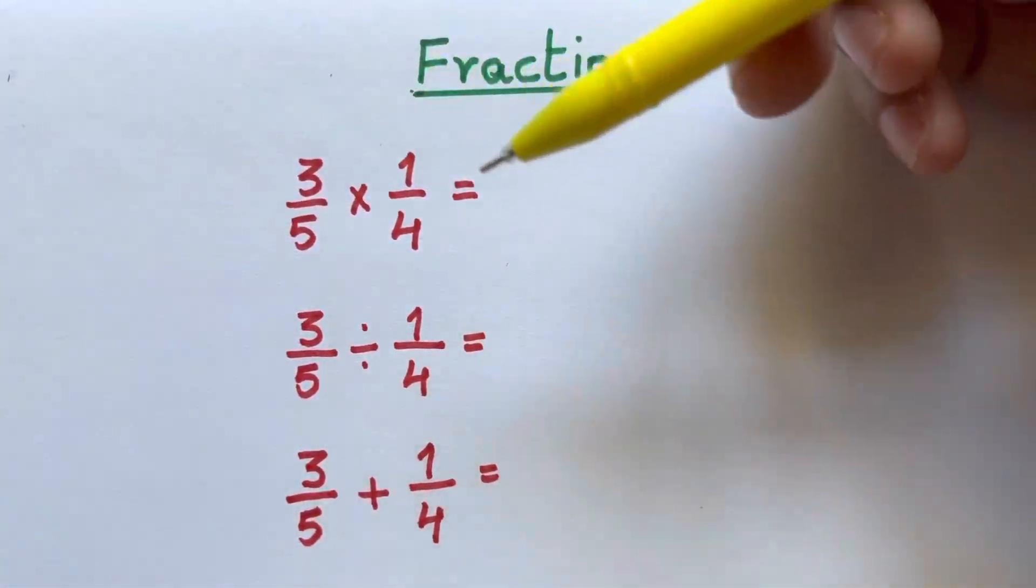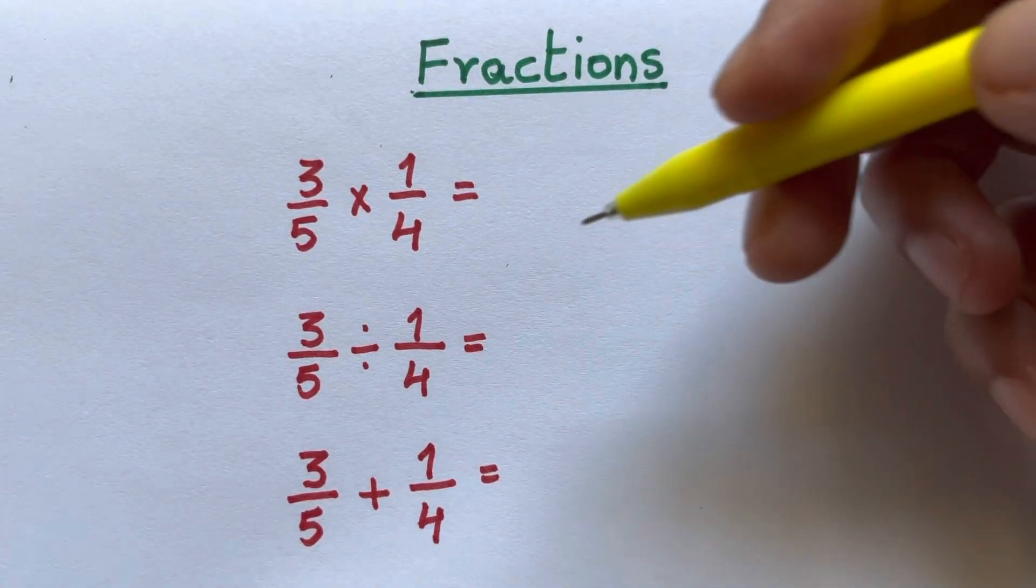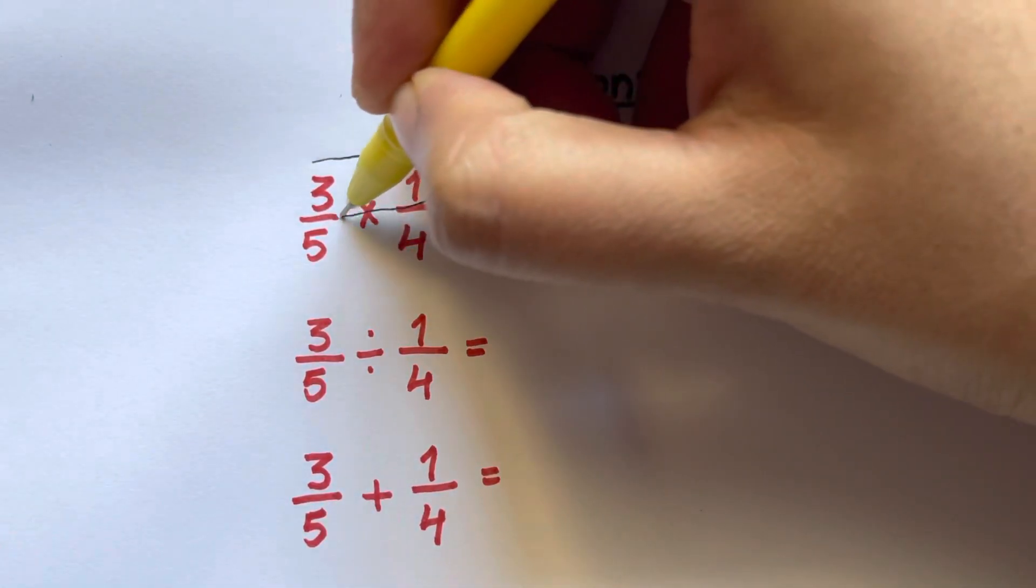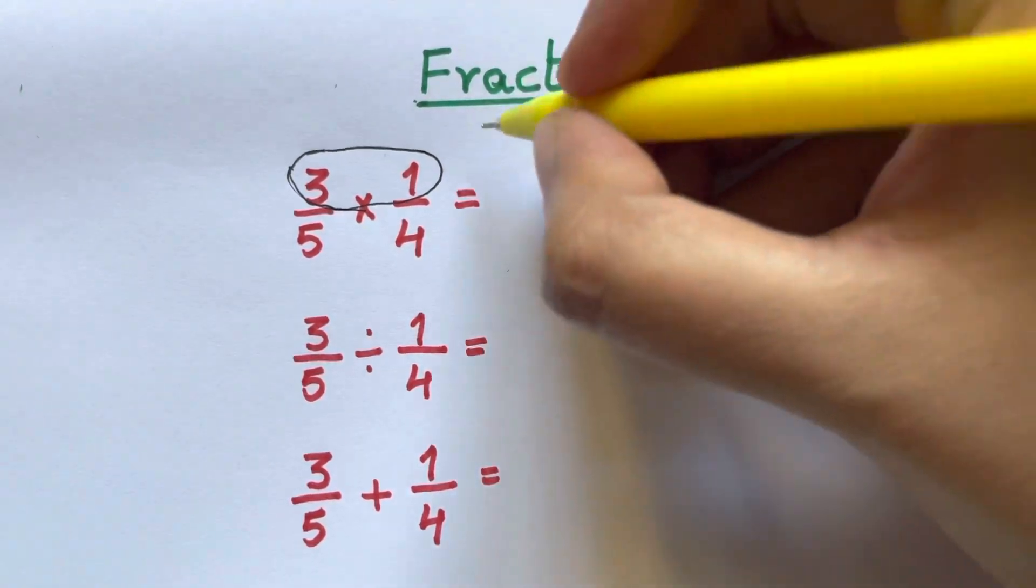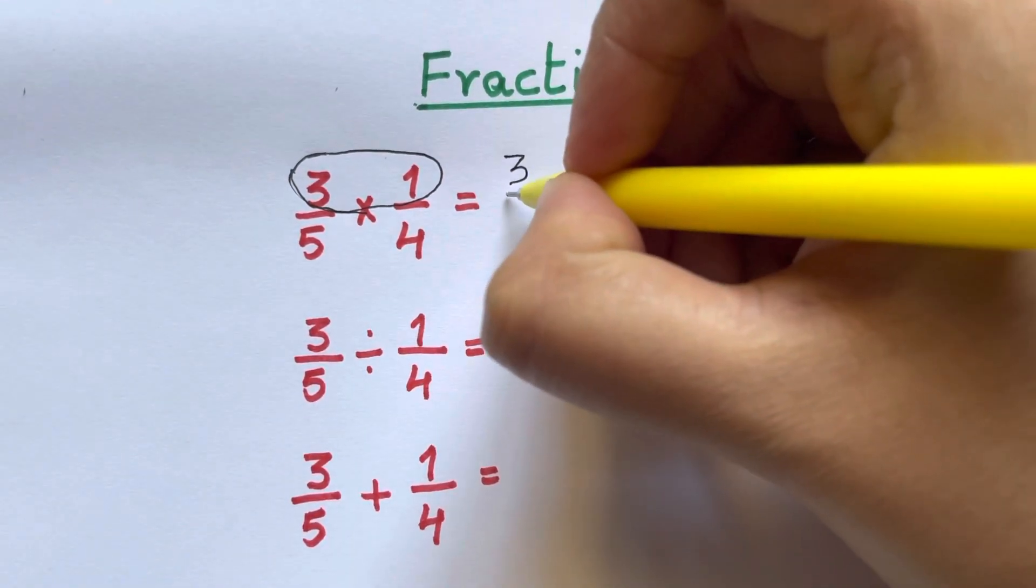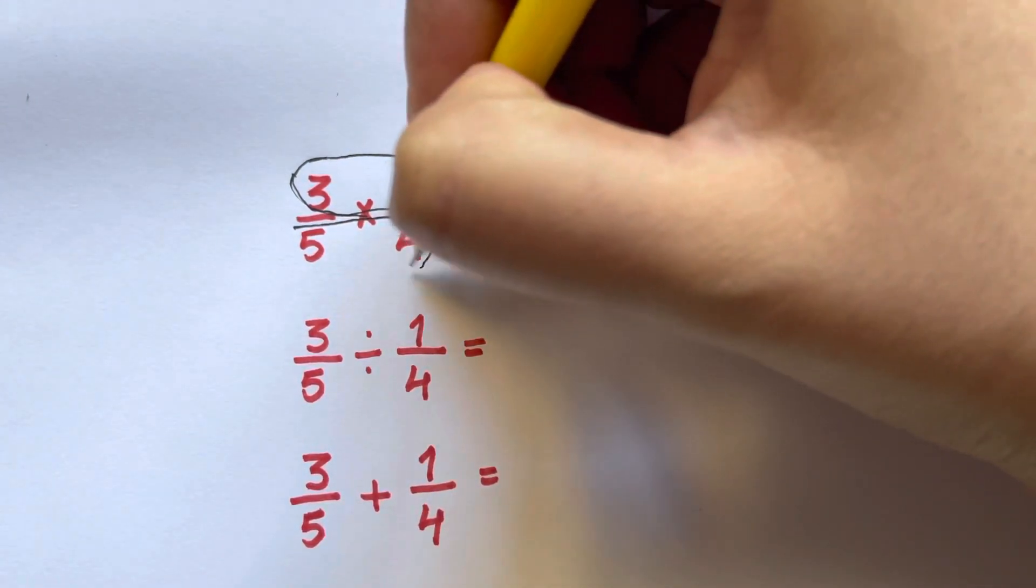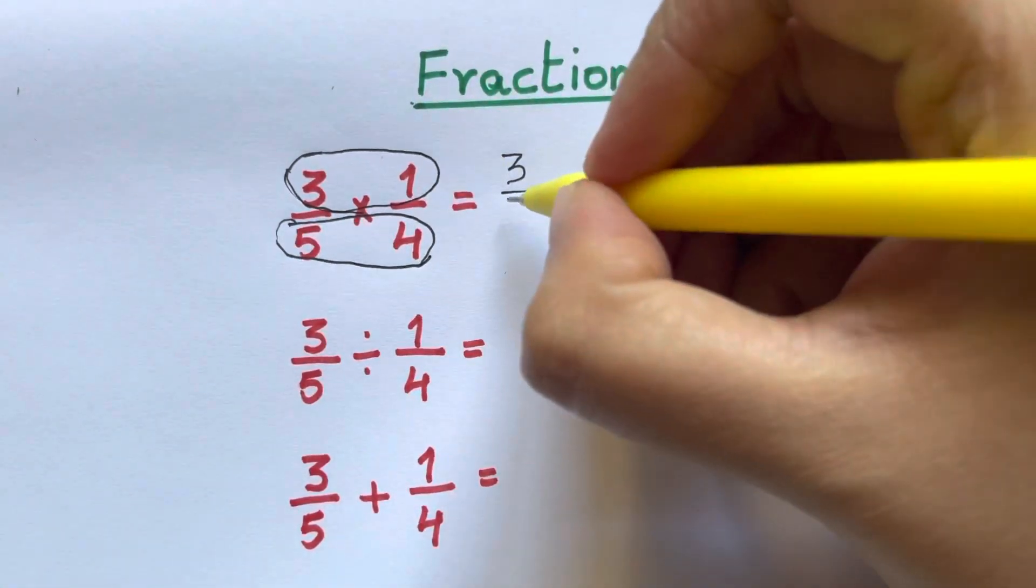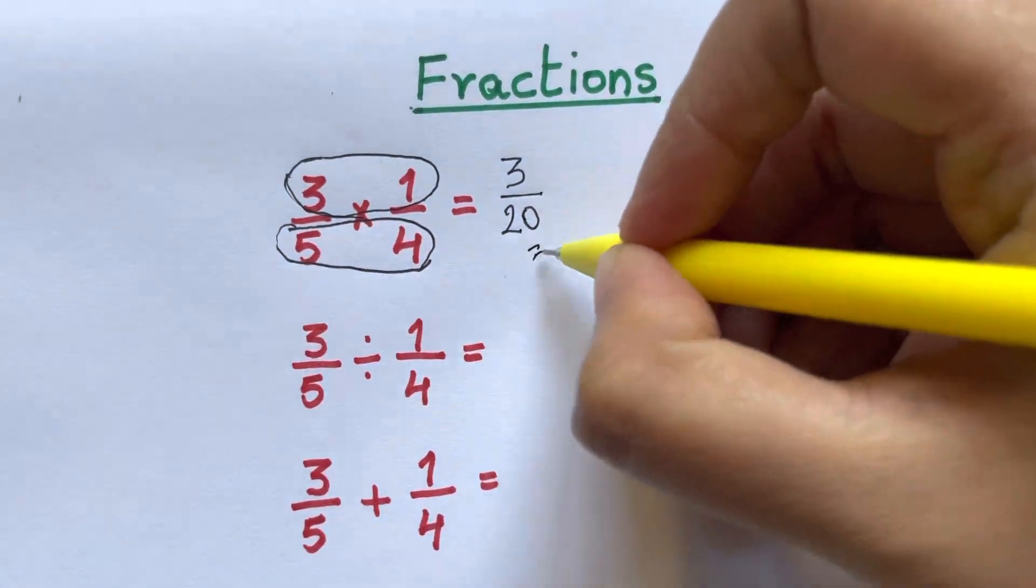So let us try out the first one. 3 over 5 multiplied by 1 over 4. All you have to do is bubble up the numbers in the numerator and multiply them together. 3 multiplied by 1 will give you 3 over... now bubble up the two numbers in the denominator and multiply them together. 5 times 4 is 20. So we're just going to write down 20. This is your answer.